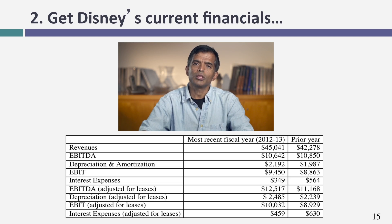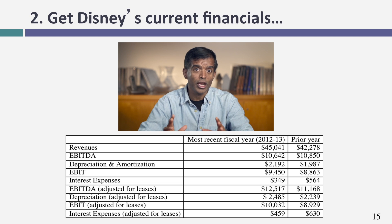If you can't use the bottom-up beta approach, use the regression beta approach to get an unlevered beta. Now let's look at the numbers driving the cost of debt — the interest coverage ratio. In the numerator is operating income. Disney's operating income in the most recent 12 months, after converting leases to debt, is $10,032 million. Because I'm treating leases as debt, I use operating income adjusted for leases: I add back the lease expense and subtract the depreciation on the capitalized lease asset. That $10,032 million is what you'll see in the numerator of the interest coverage ratio.